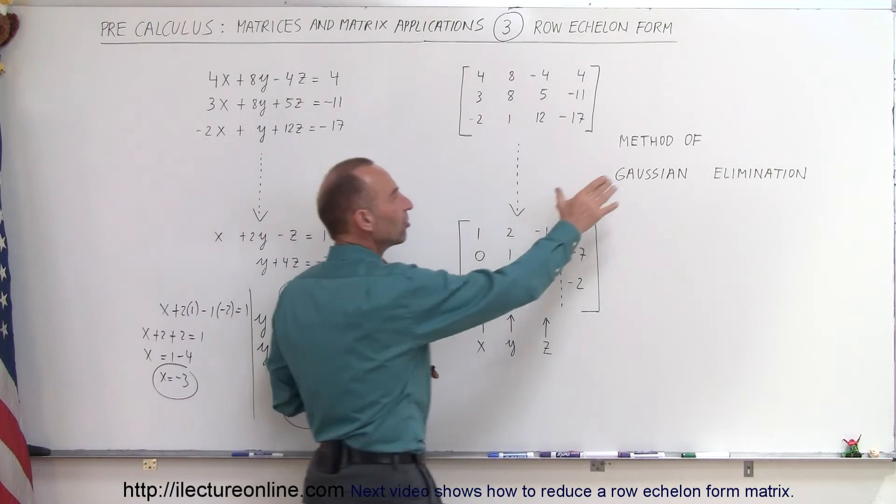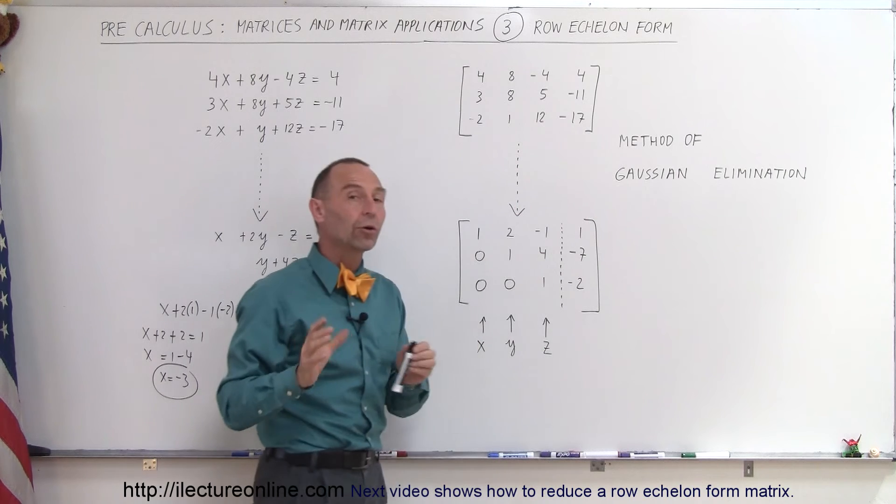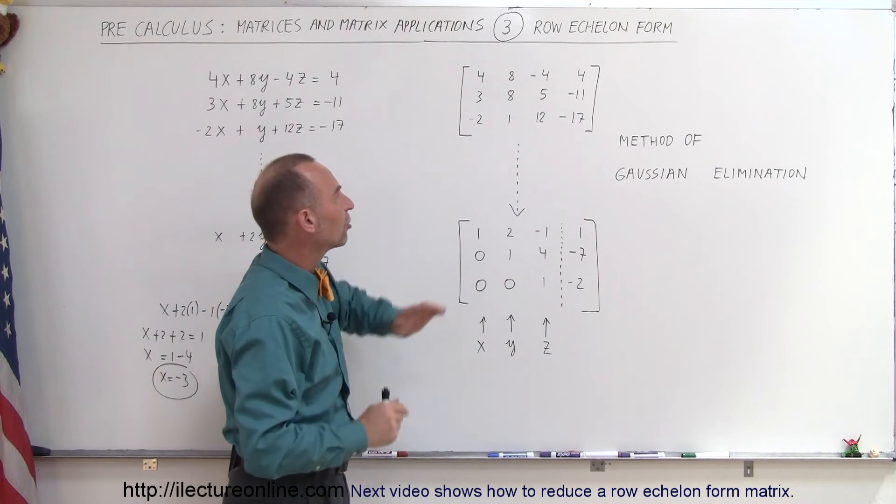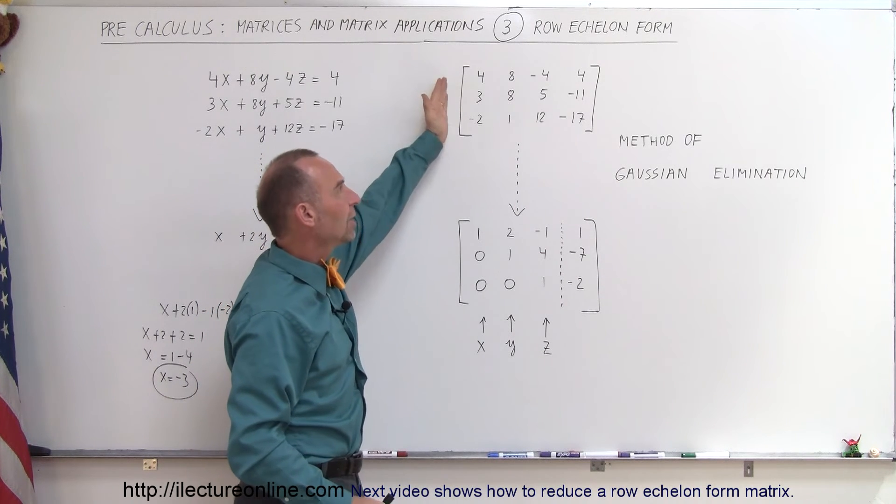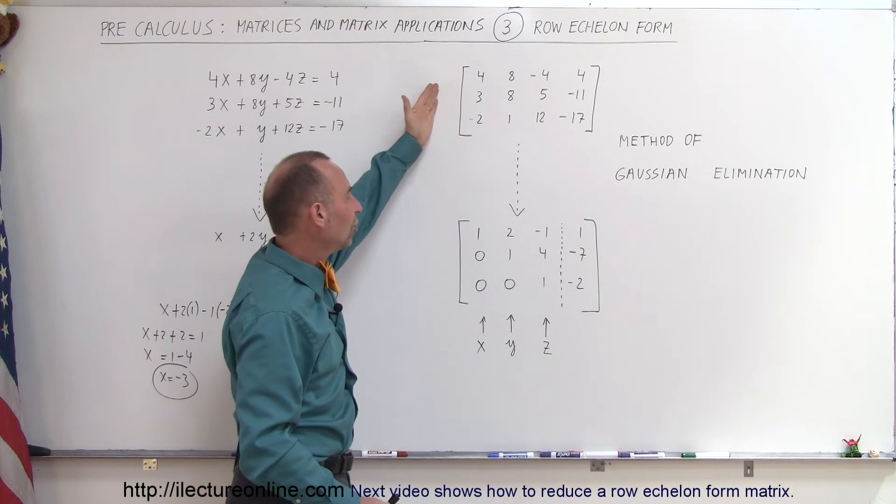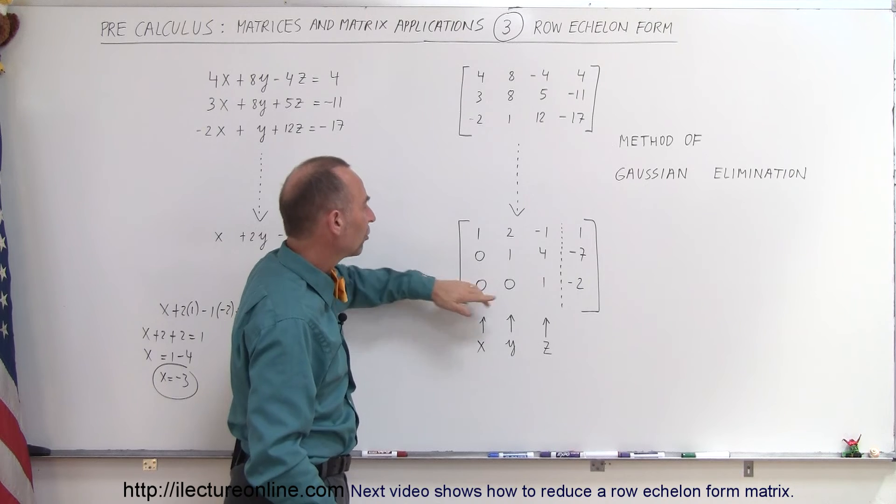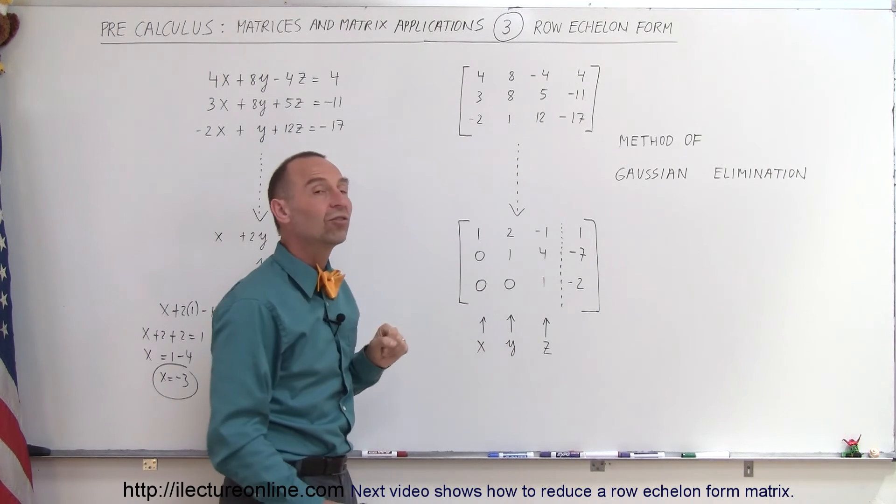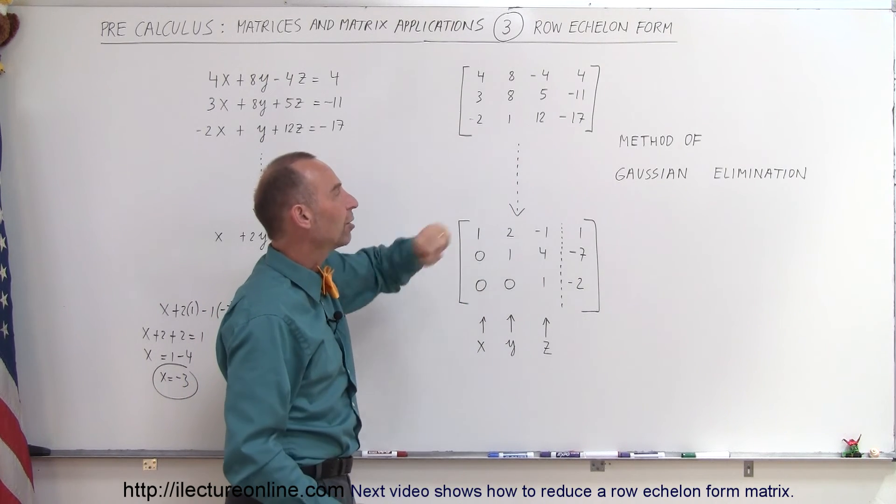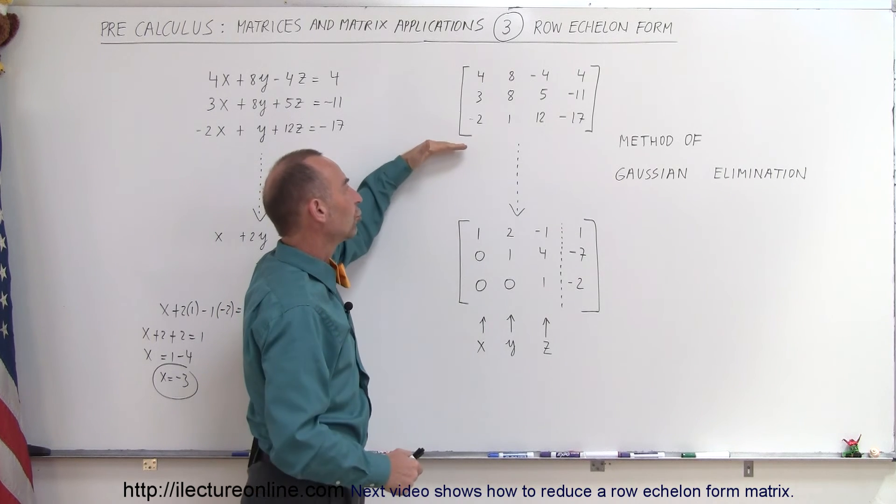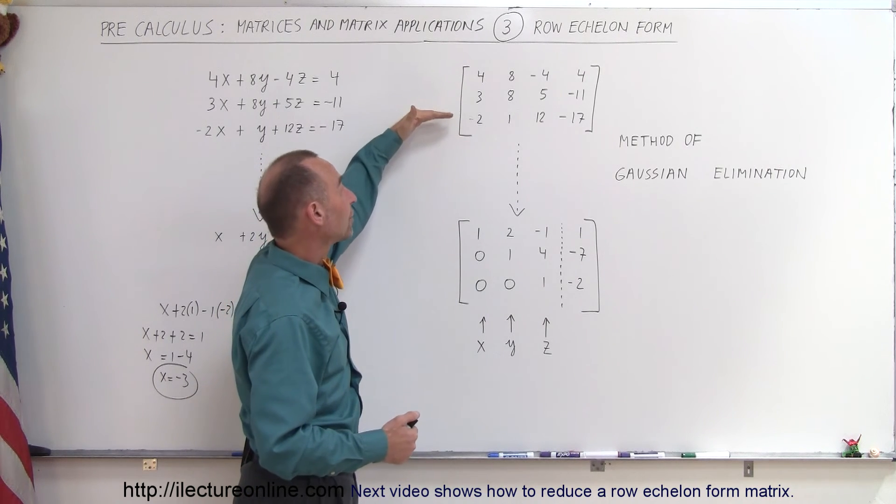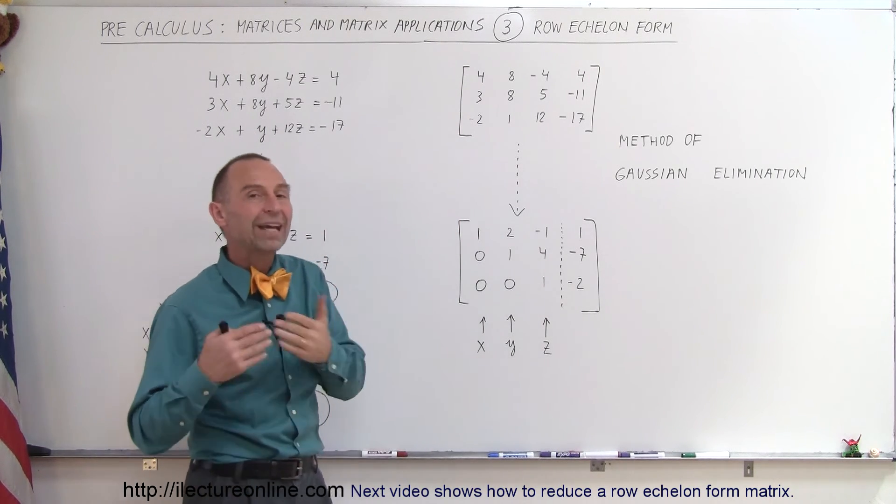So, the method of Gaussian elimination, that's what we're trying to learn here, the method of Gaussian elimination takes the original matrix, the augmented matrix, and changes it so that we have 1s across the diagonal, 0s on the bottom left corner, so that we can easily solve for x, y, and z. So this is called the method of Gaussian elimination, and we're going to show you in the next little videos how to go from here to here to be able to solve for x, y, and z.